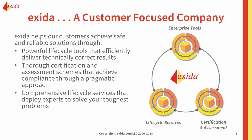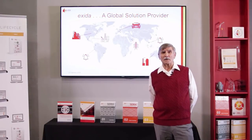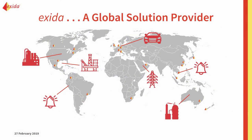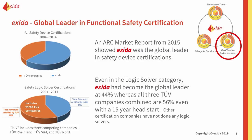I work for Exida, a customer-focused company with three primary groups. We have an enterprise tool group, which provides engineering software for systems and OEM manufacturers, a certification and assessment group, and a lifecycle system services group. Exida has grown into a global solution provider. A study done by ARC in 2015 indicated Exida was by far the world's leader in functional safety certifications. Even in the logic solver category that started over 15 years ago, Exida had a leadership position at 44% of the market — the main competitors, three different TÜV companies, only added up to 56%.